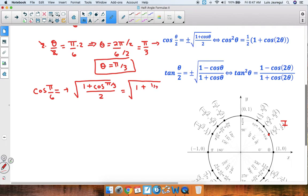So we have 1 plus 1 half, all of it over 2. Now 1 plus 1 half becomes 3 halves. So we have square root of 3 halves divided by 2.